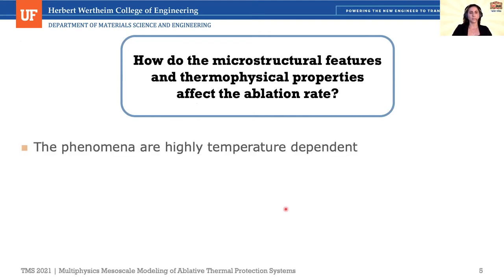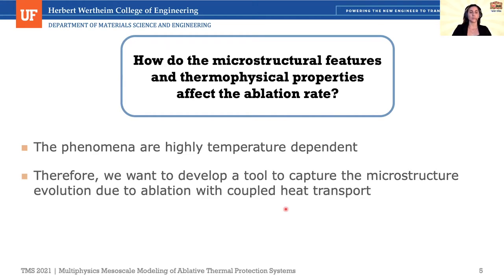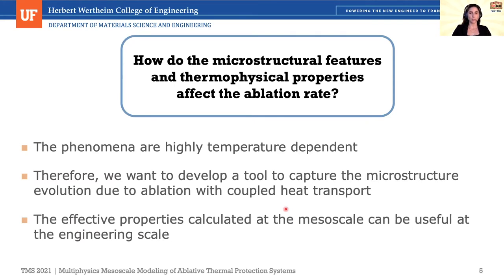All of these processes are highly temperature dependent. We have high temperatures at the surface and mild temperatures at the middle section of the PICA. We want to develop a model that can capture all the chemical reactions happening, the microstructure evolution, coupled with temperature to capture the heterogeneous temperature behavior through the thickness. We can also calculate effective properties using this model, useful for higher length-scale models that homogenize properties at the mesoscale level.